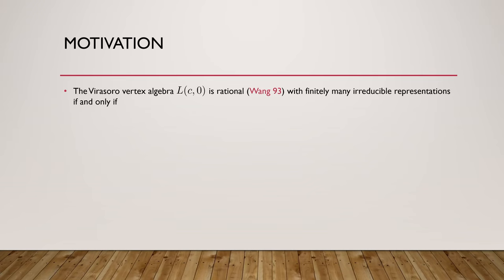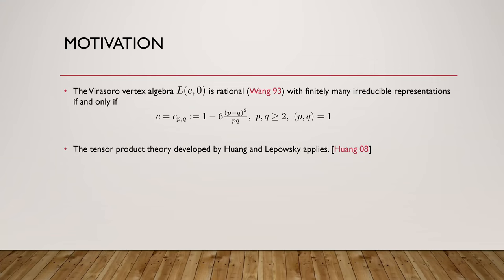It is well known, and it was proved by Wang, that the Virasoro vertex algebras are rational with finitely many irreducible representations if and only if the central charges are of this form, and we call this the minimal models. In this situation, the tensor product theory developed by Huang-Lepowsky applies, and this was proved by Huang in 2008.